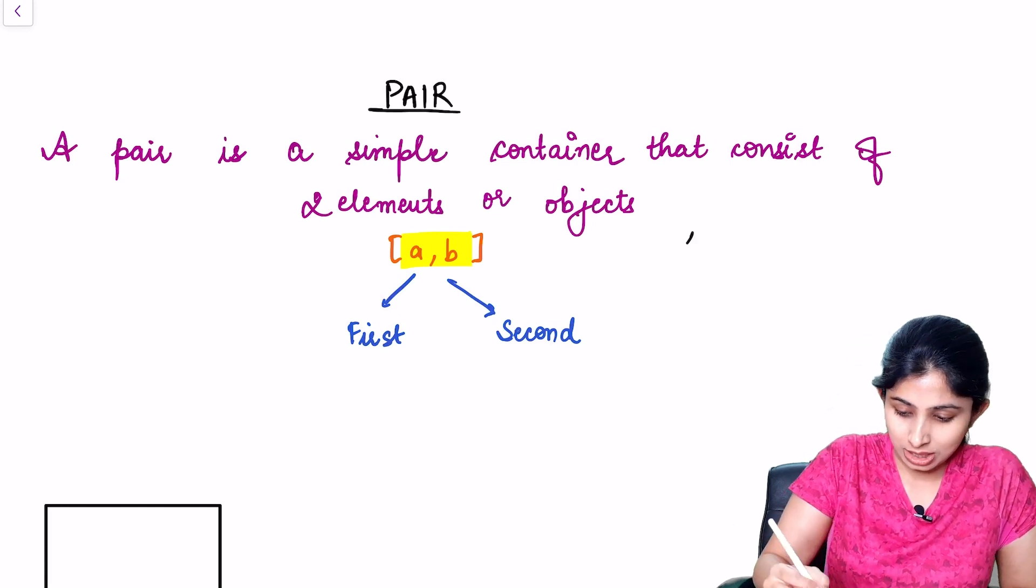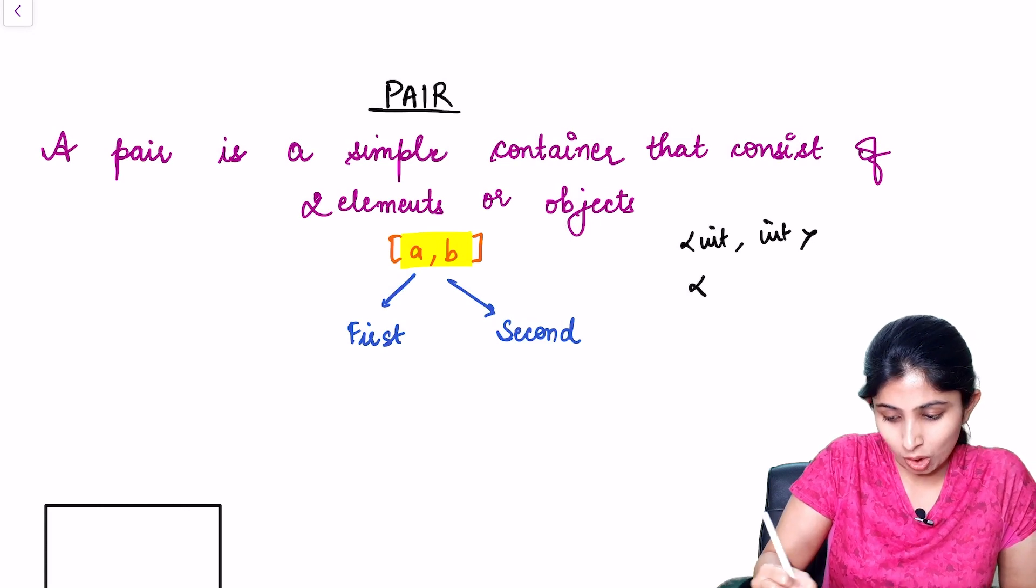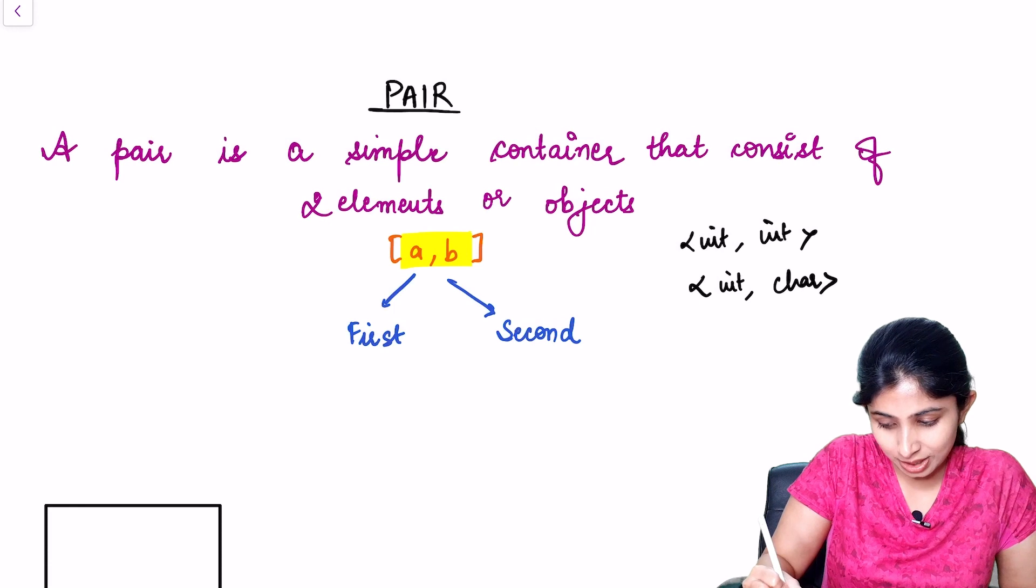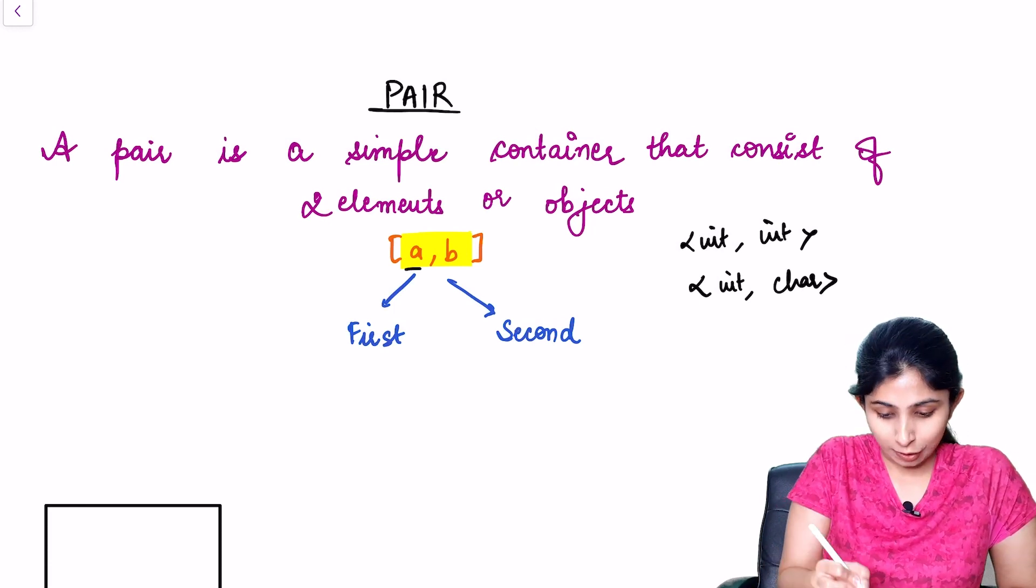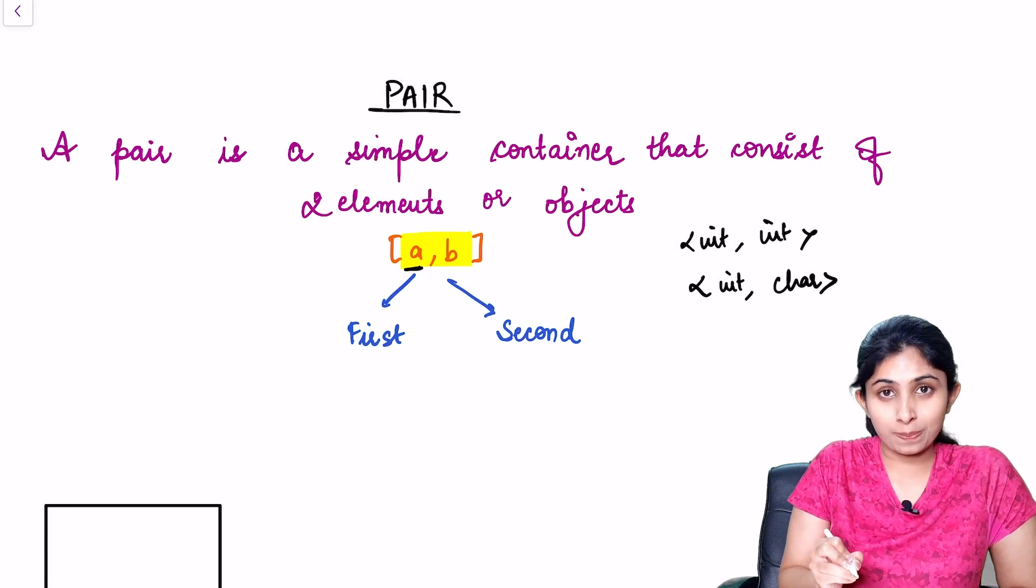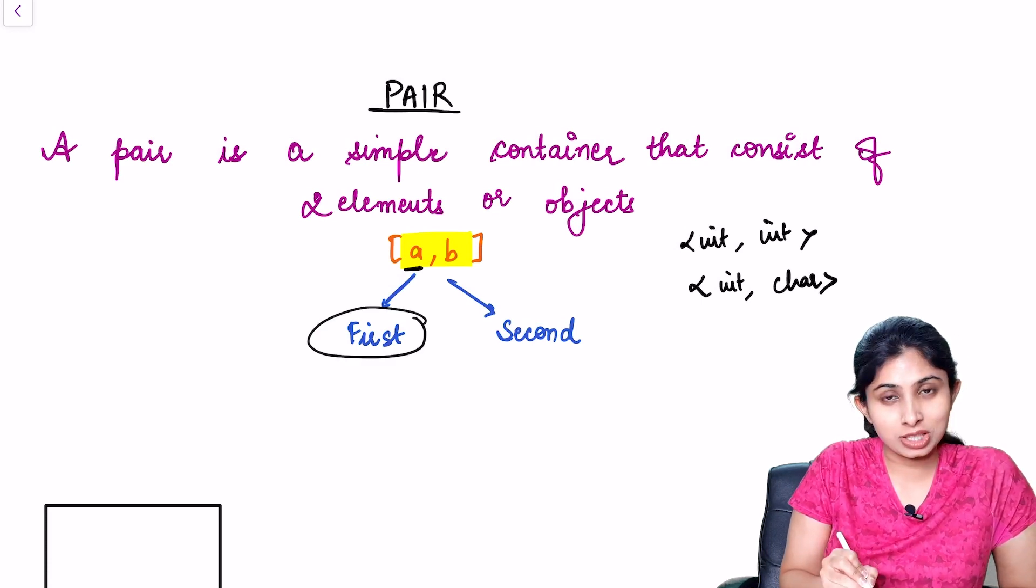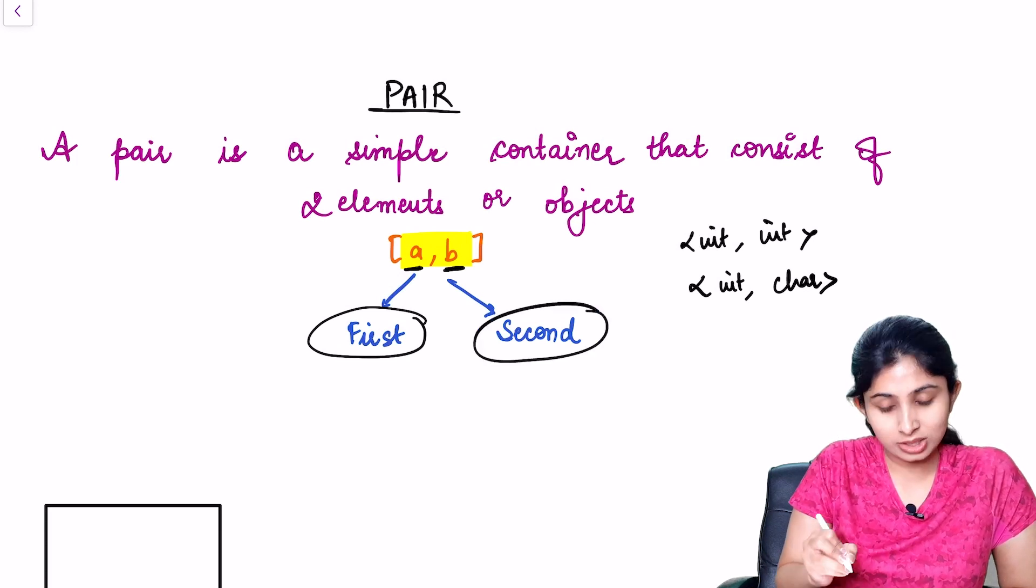For example, they both can be say int or they both can be different. Say one can be int and another one can be character or any other custom data type. The first element of our pair is referenced by a variable called first and the second element of our pair is referenced by a variable called second.